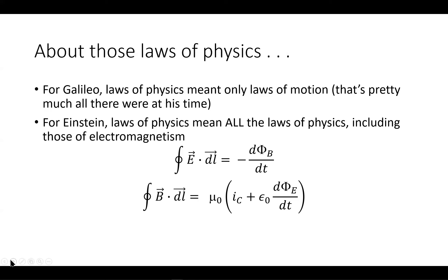But for Einstein, the laws of physics meant all of them, including the ones developed in the 1800s — the laws of electromagnetism. These include Faraday's law, the integral of E dot dL equals the negative time derivative of the magnetic flux, and an expression for the integral of B dot dL. Built into these two laws combined is a wave equation for electromagnetic waves.